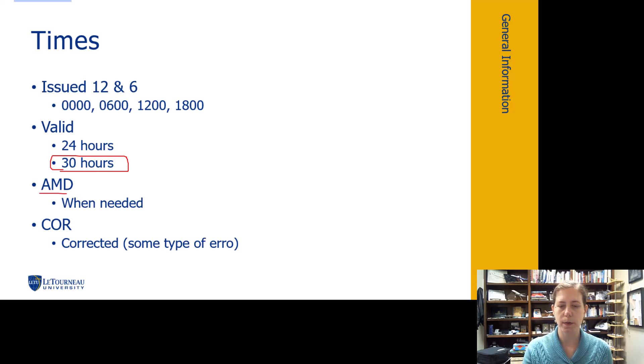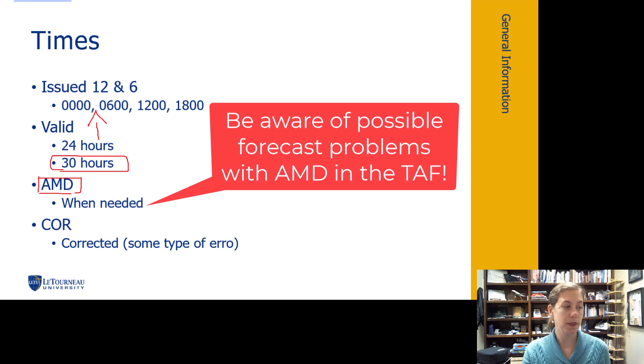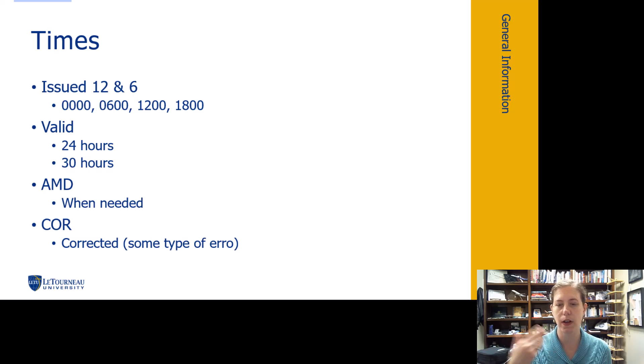Then we have amended. So sometimes we get an amended TAF. I have seen these before. If they have issued a forecast and there is something that has changed about it, is changing maybe. And it's, let's say it's 0300 and something is totally messed up. It's way between the next valid time when they're going to issue the next TAF. So they may issue an amendment to the TAF. Be aware. Be wary. If something is happening to cause a lot of amendments, I'm going to be looking closer at that weather. Because the weather isn't doing what they are forecasting enough that they've got to issue an amendment.